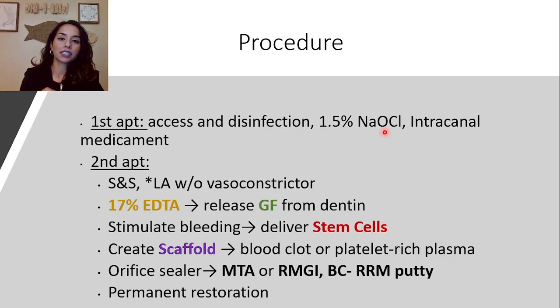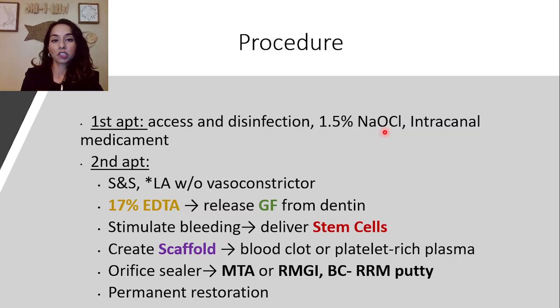Next, use sodium hypochlorite at about 1.5% to irrigate, and you can place an intracanal medicament. Because the dentinal walls are so thin, you actually don't want to instrument — those walls need to be preserved as much as possible. You're using those irrigating agents to disinfect the tooth.